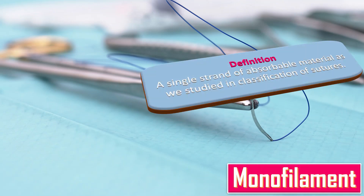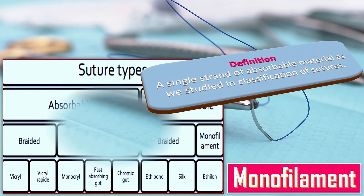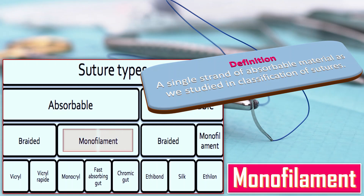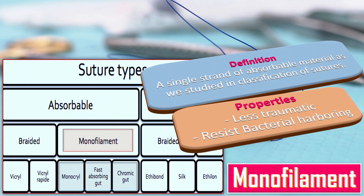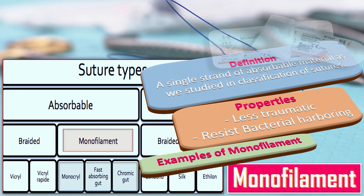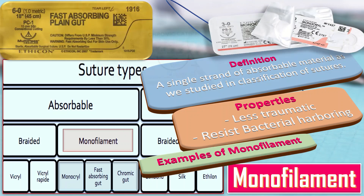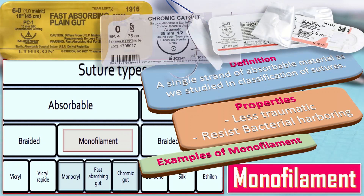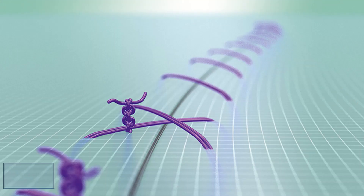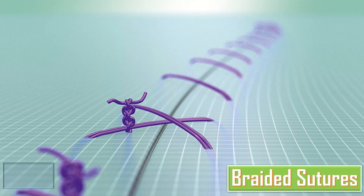Monofilament sutures consist of a single strand of material. Their properties include being less traumatic and resistant to bacterial absorption. Examples include Monocryl, fast absorbing gut, and chromic gut.